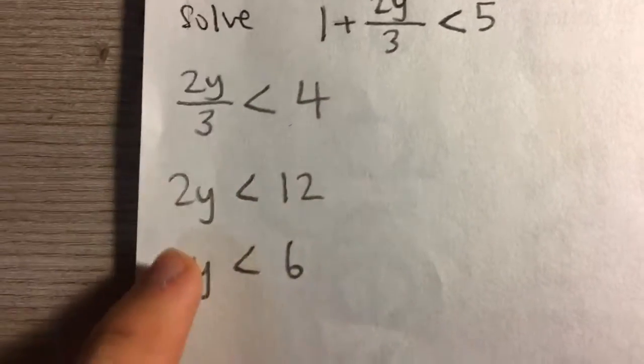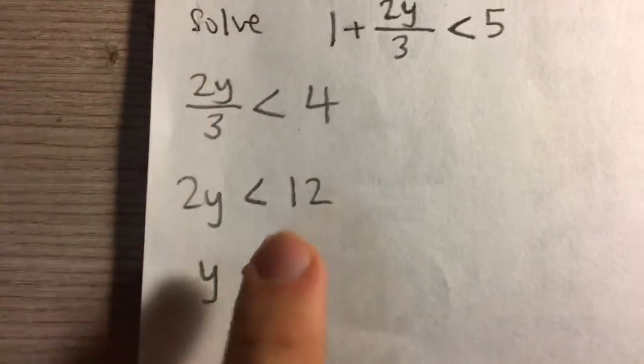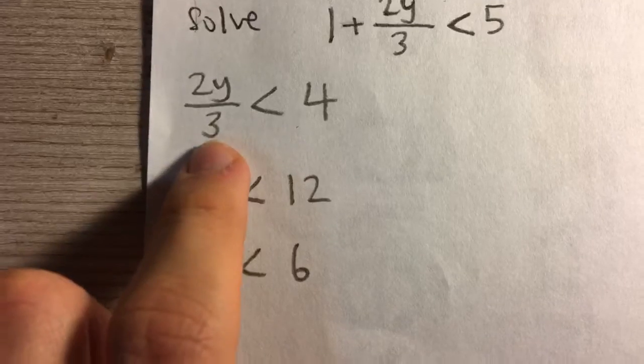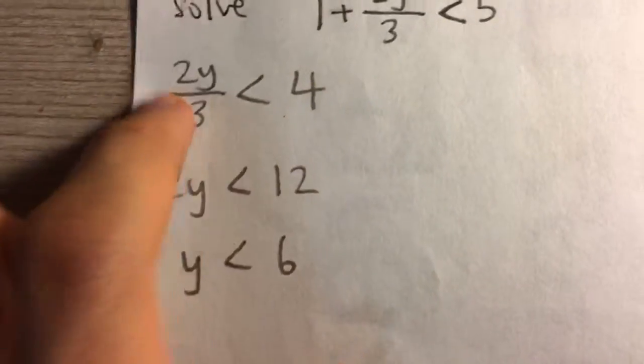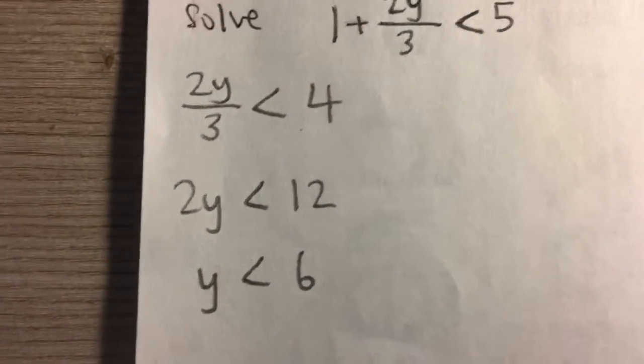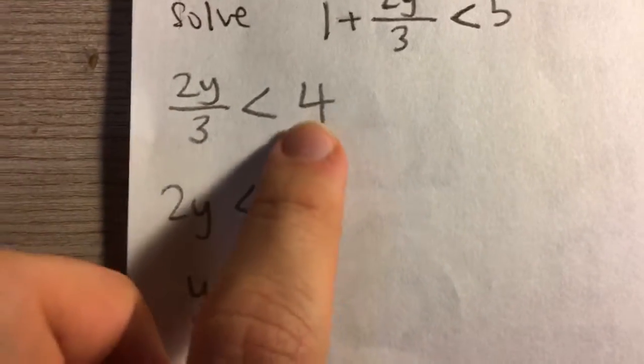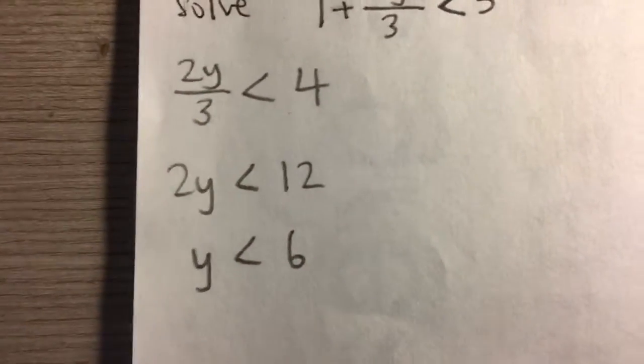On the left, I still have 2y over 3. Now I'm going to multiply to get rid of the 3 in the denominator. I'm going to multiply both sides of the inequality by 3. That cancels out the 3 on the left, and 4 times 3 is 12.